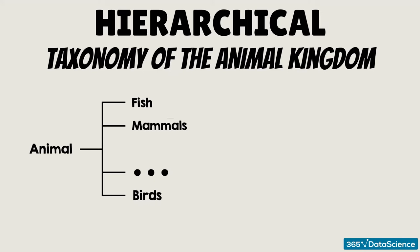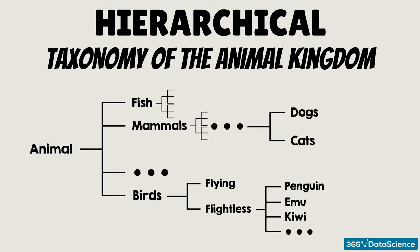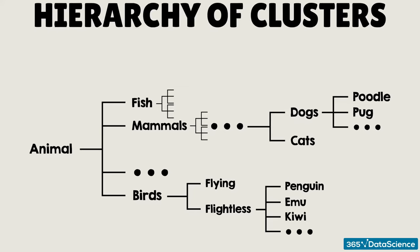There are birds which can fly and those that can't. We can continue in this way until we reach dogs and cats. Even then, we can divide dogs and cats into different breeds, and moreover, some breeds have sub-breeds. This is called a hierarchy of clusters.